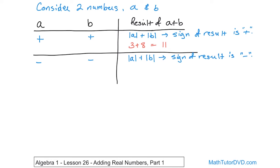For example, negative 3 plus negative 2. We've used this on the number line before. You're always going to get negative 5. In this case, I start out owing $3 — a negative bank balance — and I borrow two more dollars, so I owe the bank $5 at the end. When adding two negative numbers, you ignore the signs, add the numbers to get 5, and the sign of the result is always negative.